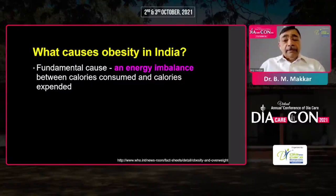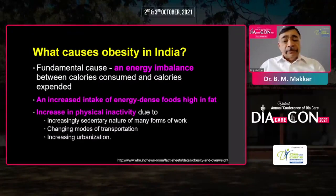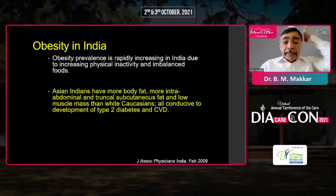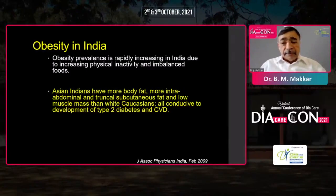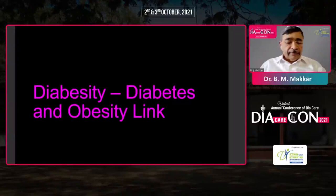The fundamental cause of energy imbalance in India appears to be increased intake of energy-dense foods high in fat, coupled with increase in physical inactivity, possibly due to the increasingly sedentary nature of many forms of work, changing modes of transportation, and increasing urbanization. We all know that Asian Indians have more body fat, more intra-abdominal fat, more truncal subcutaneous fat, and less muscle mass — a sarcopenic obesity phenotype — which is conducive to development of type 2 diabetes and cardiovascular risk. We also have studies showing we get the risk of cardiovascular comorbidities at lower levels of BMI and waist circumference.